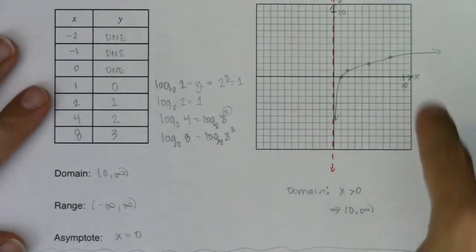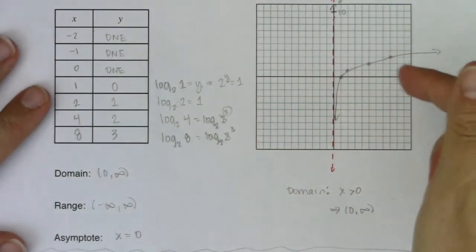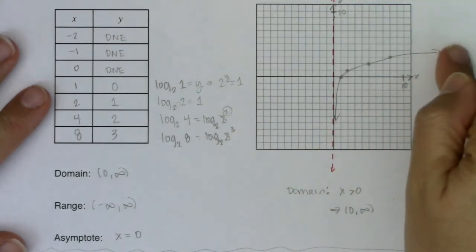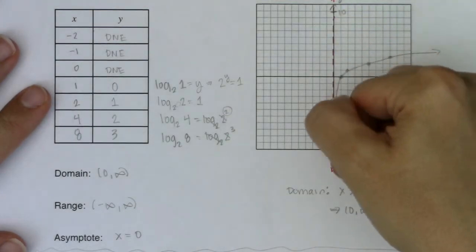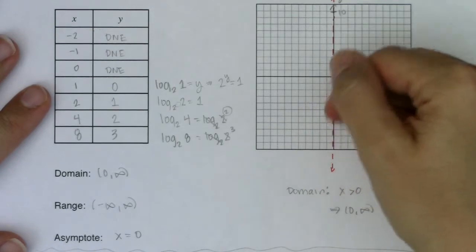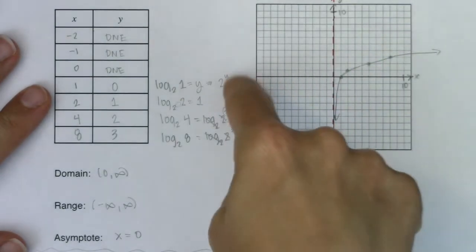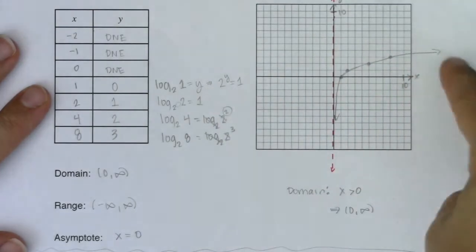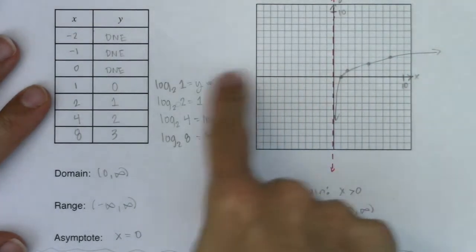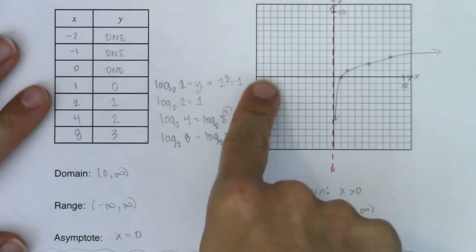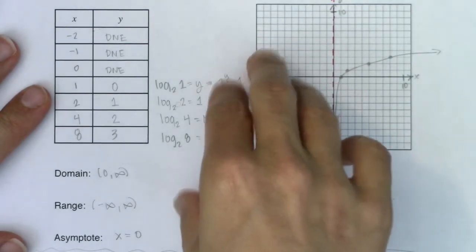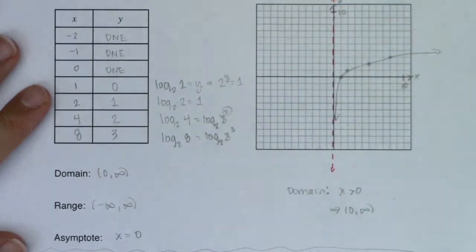So sometimes there's a misconception that end behavior is the left end of your graph and the right end of your graph. So some people would say, well, I have a vertical asymptote for my left-end behavior. My arrow is going down. That's incorrect. End behavior is the left end of the x-axis and the right end of the x-axis. So there is nothing on the left side of my x-axis. That's why I have no end behavior on the left. But I do have a right arrow going up.